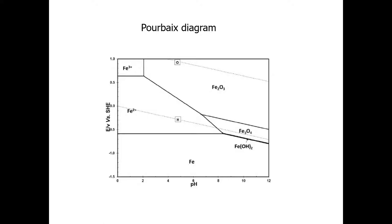This is very important to understand because we're going to talk about cathodic protection in a few minutes. In that form of protection, we're applying a potential to the object we want to protect — in this case, a piece of steel made of iron. I'm showing the Pourbaix diagram for pure iron, but it's pretty much the same for any kind of steel.